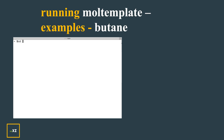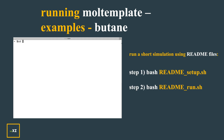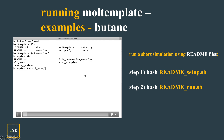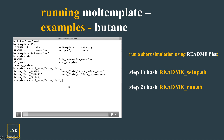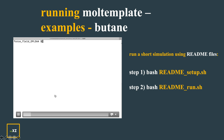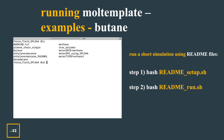Now I want to show an example on butane. There are many examples given in MOL template and we will run one of them. I go to the MOL template folder, press list, and you see the examples folder. I go to the examples folder, then to all_atom, then to forcefield_OPLSAA. I press list and go to the butane folder.